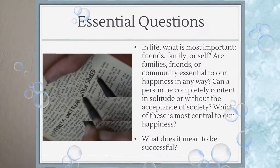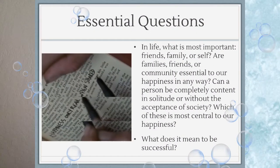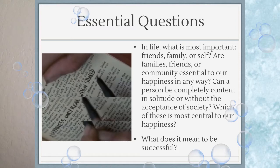I want you to look at these essential questions and think about them as we read through this book. Your answers to these questions might even change depending on how much this book impacts you. In life, what is most important — friends, family, or oneself? Are families, friends, or community essential to our happiness in any way? Can a person be completely content in solitude or without the acceptance of society? Which of these is most central to our happiness? And what does it mean to be successful?